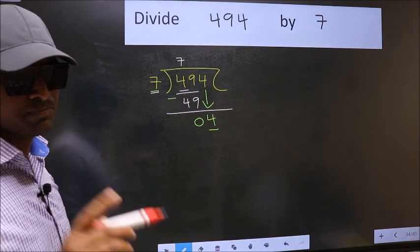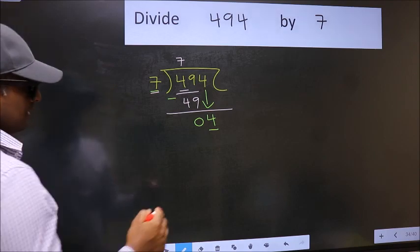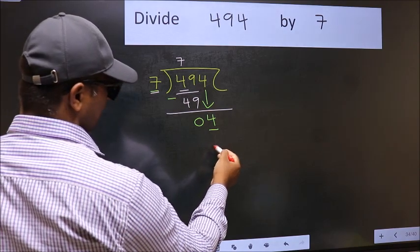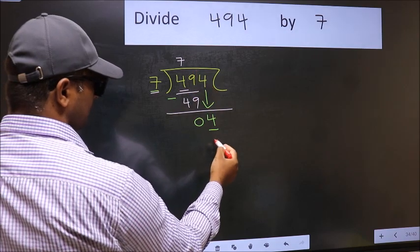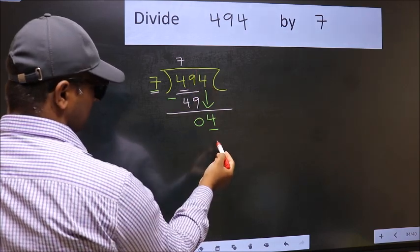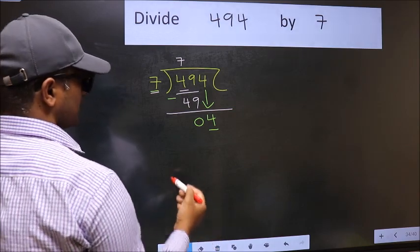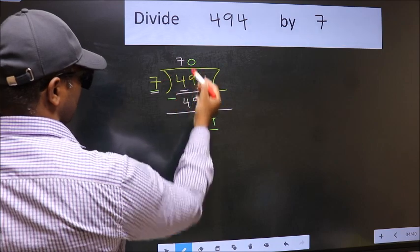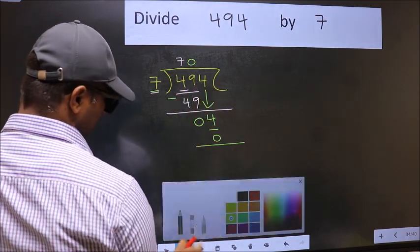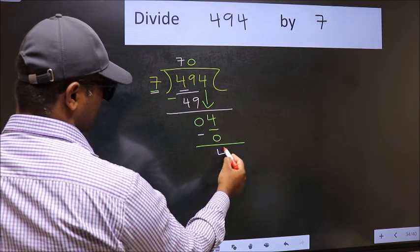Instead, what you should think of doing is, what number should we take here? If I write 1, we will get 7, but 7 is larger than 4. So what we should do is take 0. So 7 into 0 is 0. Now you should subtract: 4 minus 0 is 4.